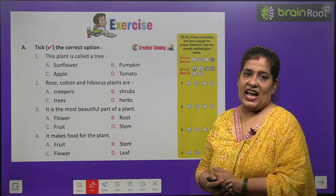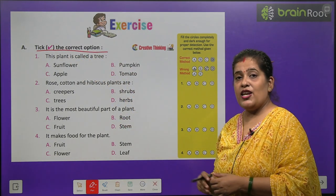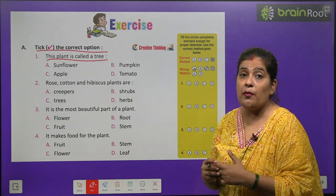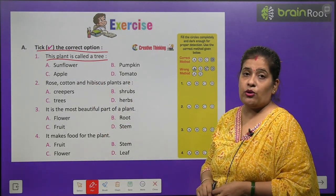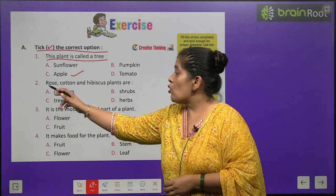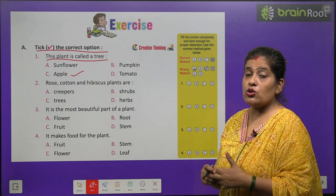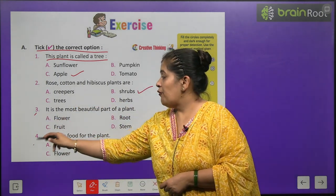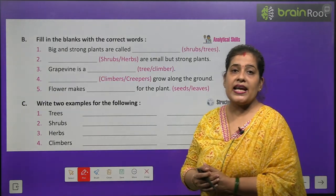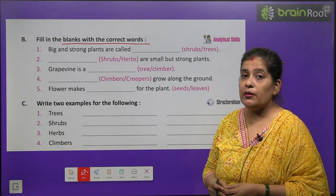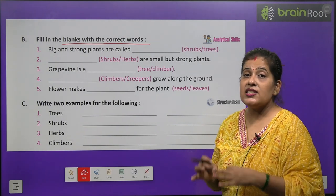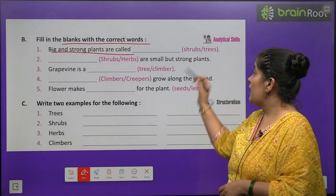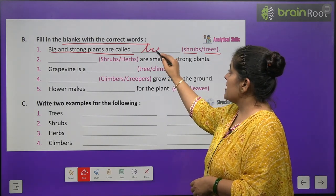Now time to do exercise. Exercise A — tick the correct option. This plant is called a tree: sunflower, pumpkin, apple, or tomato. The correct option is apple — apple ka tree hota hai. Next, rose, cotton, and hibiscus plants are — creepers, shrubs, tree, or herbs? The correct option is option B — shrubs. Questions 3 and 4 you will do by yourself. Exercise B — fill in the blanks. Big and strong plants are called — shrubs or trees? The correct word is trees — T-R-E-E-S.